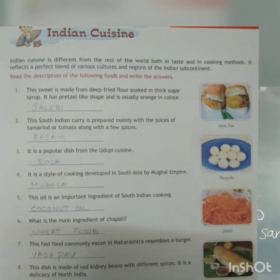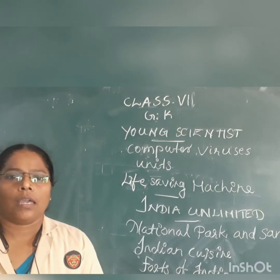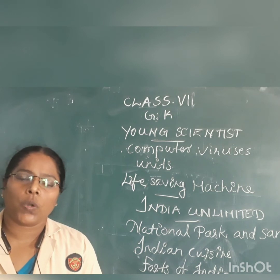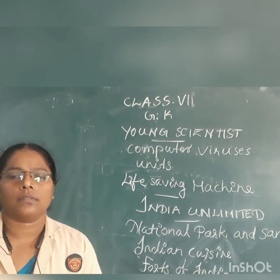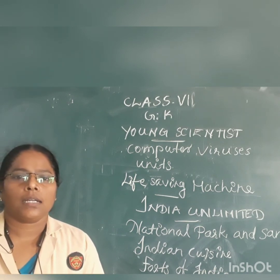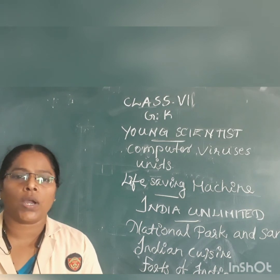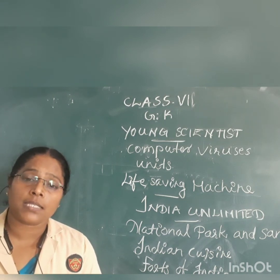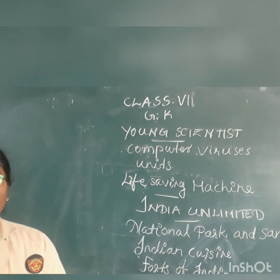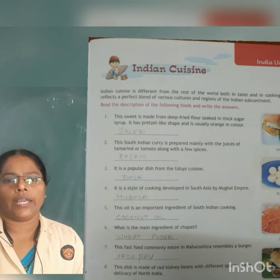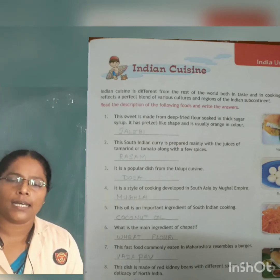Indian Cuisine consists of a variety of regional and traditional cuisine native to the Indian subcontinent. Given the diversity in soil, climate, culture, ethnic groups and occupations, the cuisine substantially uses locally available spices, herbs, vegetables and fruits. Write the description of the following foods and write the answers.